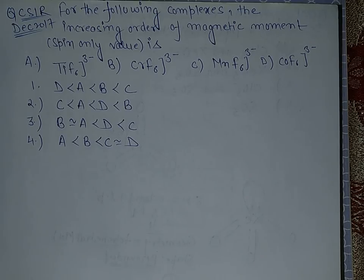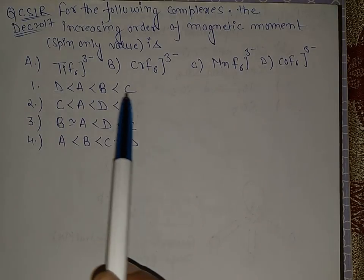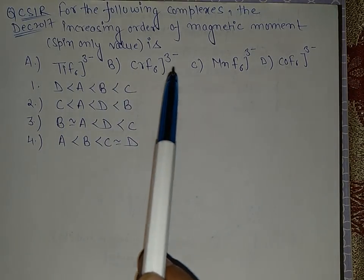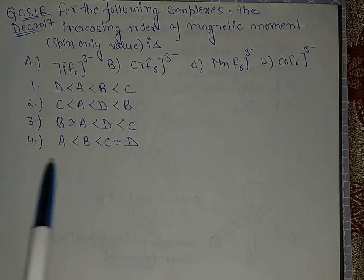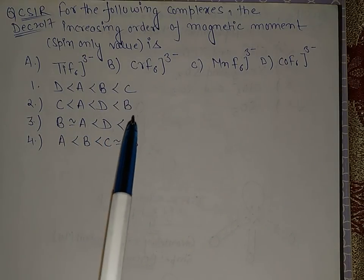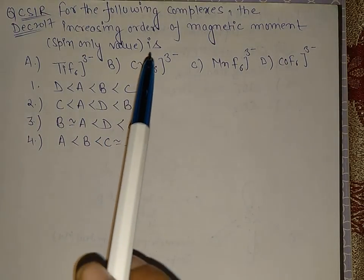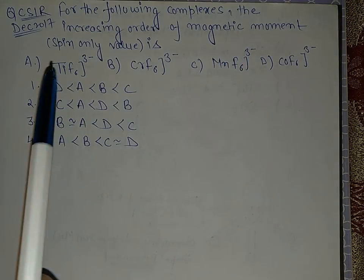Hello everyone, this question came today in CSIR December 2017 paper. This is a very basic question. In the question, we have to arrange the options in increasing order of magnetic moment. Let's start.